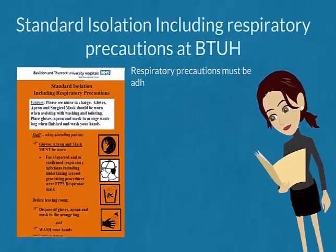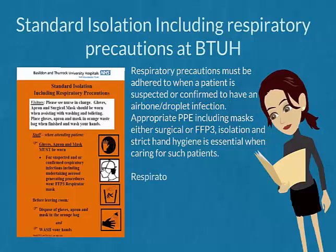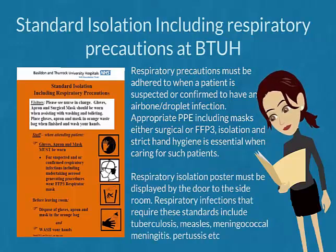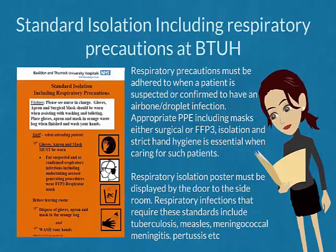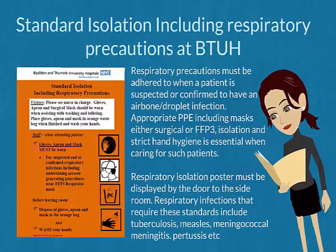At BTUH, standard isolation including respiratory precautions must be added when a patient is suspected or confirmed to have airborne or droplet infection. Appropriate PPE — including masks, either surgical or FFP3 — isolation, and strict hand hygiene is essential when caring for such patients. These standards include but are not limited to tuberculosis, measles, meningococcal meningitis, and pertussis.